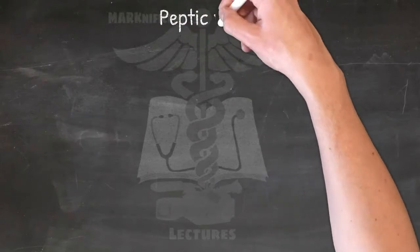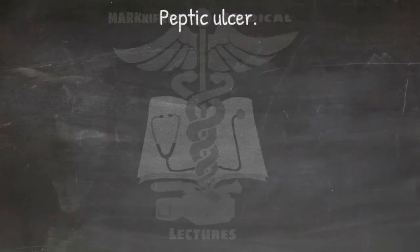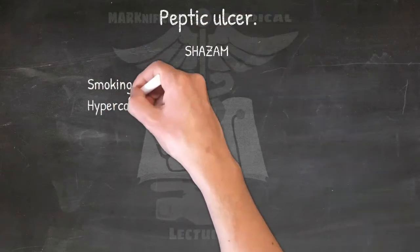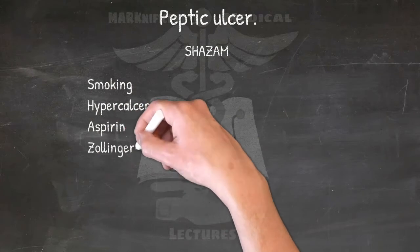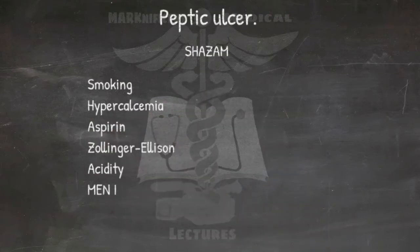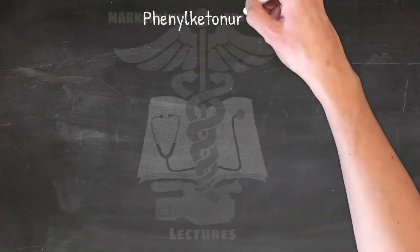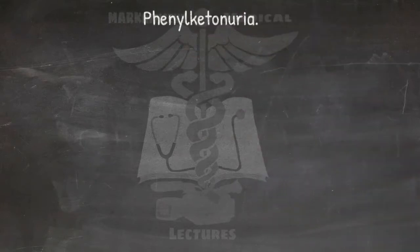Peptic ulcer — its associated causative factors: SHAZAM — Smoking, Hypercalcemia, Aspirin, Zollinger-Ellison, Acidity, and Multiple endocrine neoplasia type 1. These may work with H. pylori to promote ulceration, or may act alone.